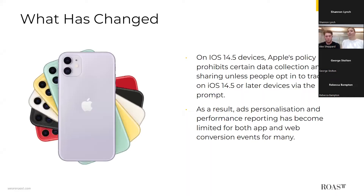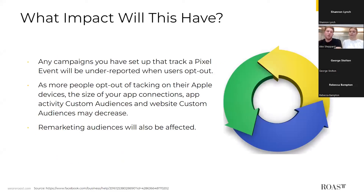The iOS 14 update has caused major ripples amongst marketers due to Apple's new stance on app tracking — Apple users now need to opt into tracking rather than opt out. On iOS 14.5 devices, Apple's policy prohibits certain data collection and sharing unless people opt into tracking via the prompt. As a result, ad personalization and performance reporting has become limited for both app and web conversion events. Campaigns tracking a pixel event are now likely under-reported, and as more people opt out, app connections, activity custom audiences, and website custom audiences have decreased — significantly impacting the ability to remarket and increasing reliance on prospecting audiences.